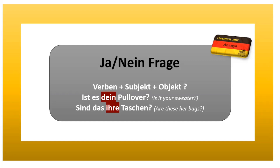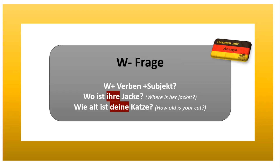W-Fragen are also very similar, but you have to put a W-word first. The rule is: W-word plus verb plus subject. For example: 'Wo ist ihre Jacke?' — where is her jacket? Another example: 'Wie alt ist deine Katze?' — how old is your cat? So 'deine Katze' and 'ihre Jacke' — these are all possessions shown through possessive pronouns.